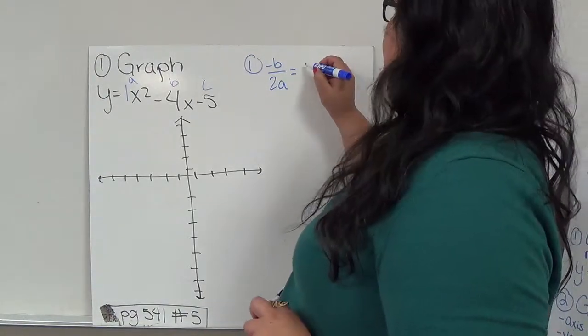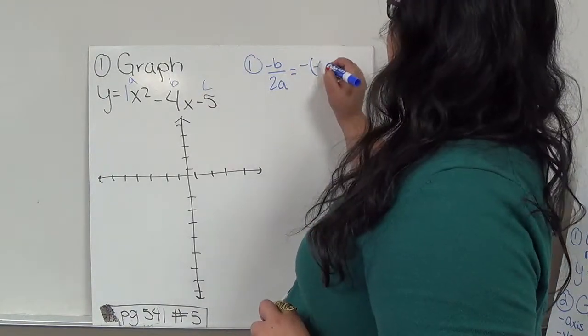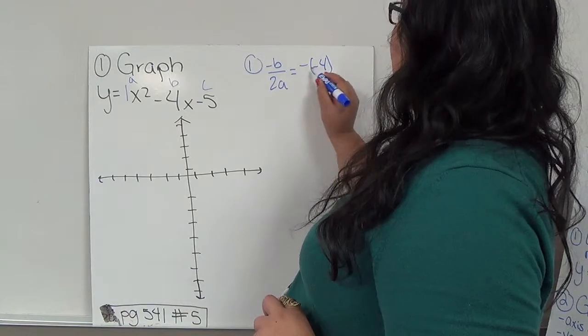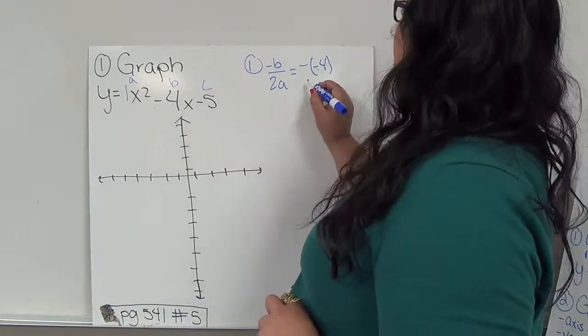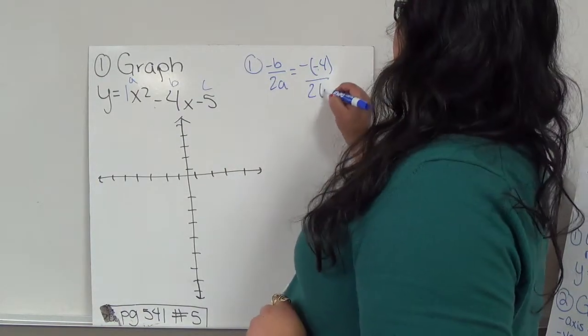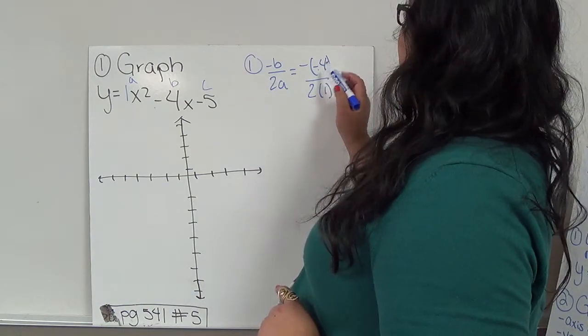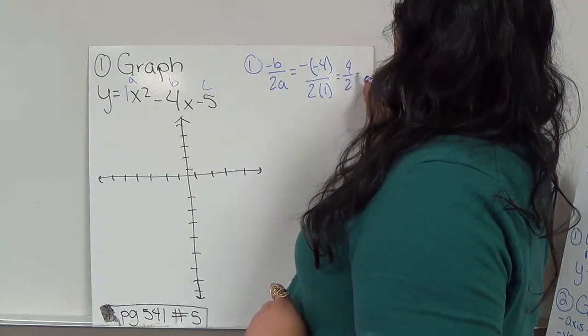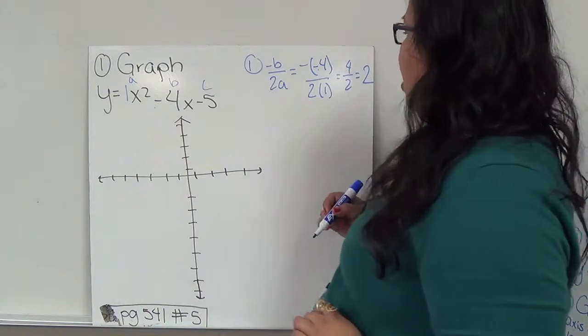So negative B, negative, negative 4. We have the negative from here, and this negative 4 is from this. And then 2 times 1. Well, this is 4, it's positive 4 over 2, which is 2.